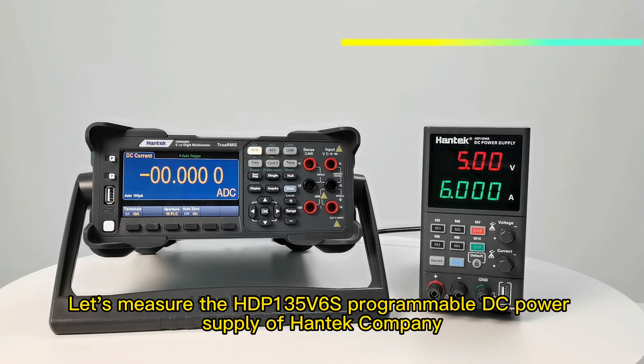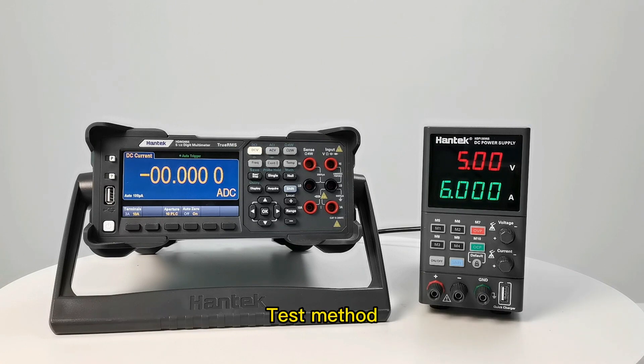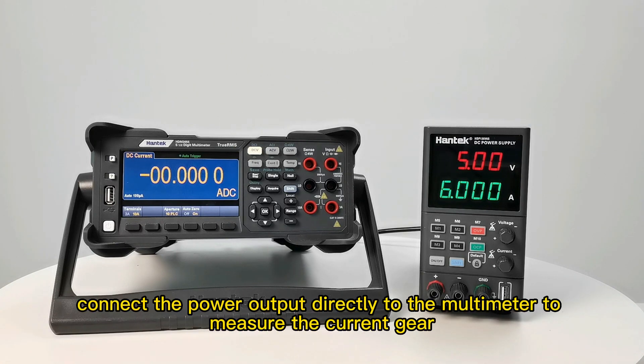Let's measure the HDP-135V6S programmable DC power supply from Hantek company. We'll test output current accuracy in CC mode by connecting the power output directly to the multimeter's current measurement terminals.